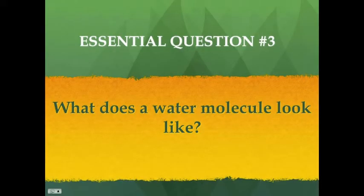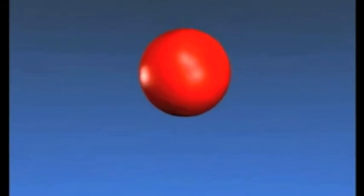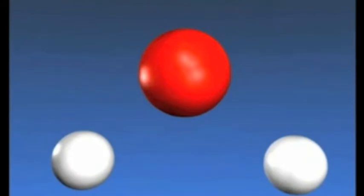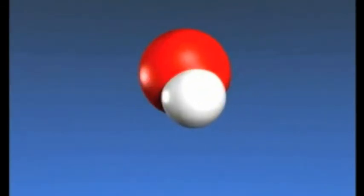Essential question number three: What does a water molecule look like? The chemical formula of water is H2O, meaning every water molecule is made up of two hydrogens attached to one oxygen. Here's our oxygen in red, looking for two hydrogens to bond with. The two white structures on the screen are hydrogens. Hydrogen atoms want to bond to oxygen because they don't have enough electrons to be stable. When they bind to oxygen, they share the electrons in the outer orbital or energy cloud of the oxygen atom to become stable.